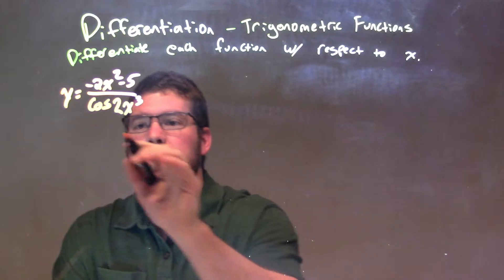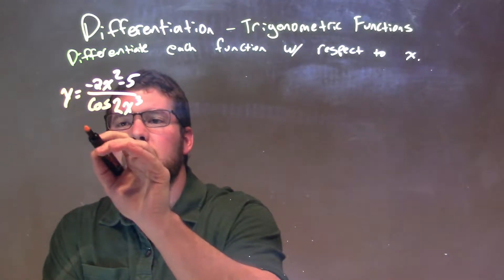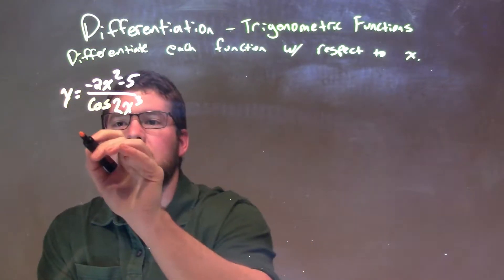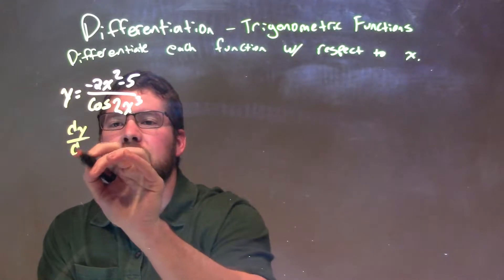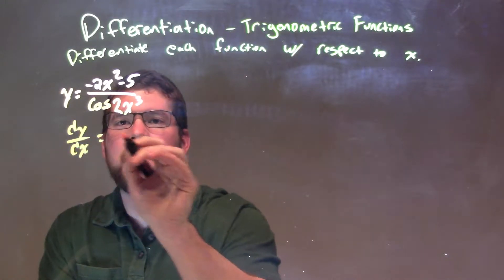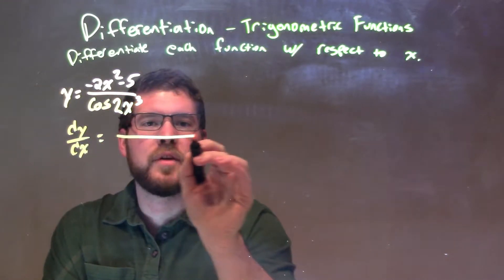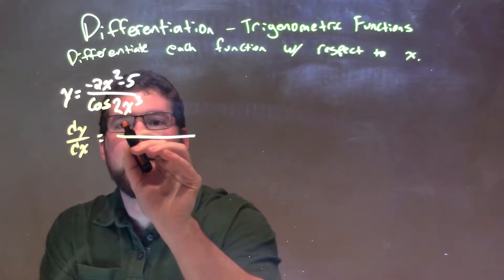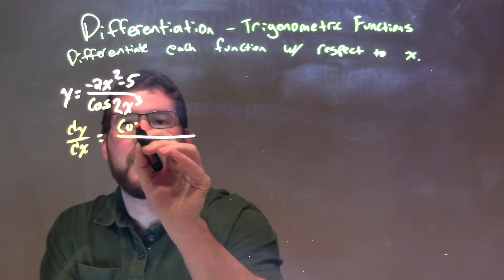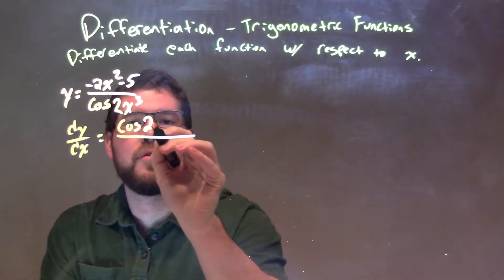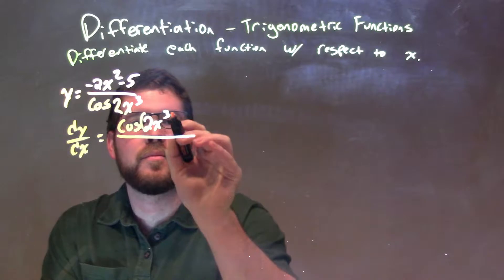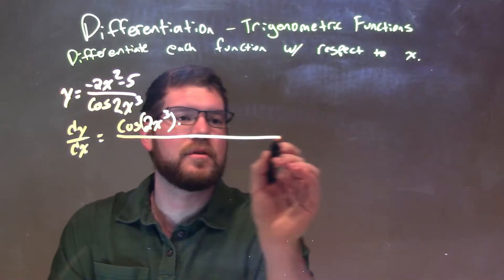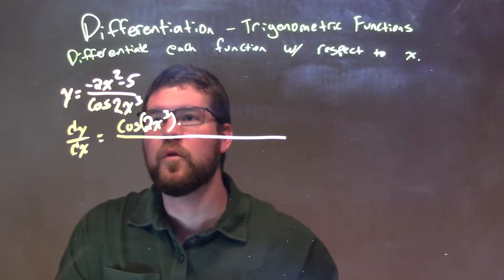So we're going to apply the quotient rule. We take the derivative, dy dx, and the quotient rule states we need to take the denominator — cosine of 2x to the third — times the derivative of the numerator.